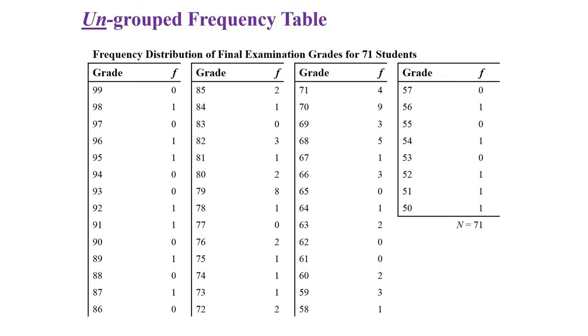So let's look at an ungrouped frequency distribution first. Here's an ungrouped frequency table of 71 students' grades. In this case, the person arranged the grades with the highest ones first. That's not the most common. It's usually the most common to start with low and then go higher. But you can see there's a lot of ones and a lot of zeros. This really could be condensed. If we're trying to see the overall pattern in the data, you could condense this a bit. Now you'll lose some information though.